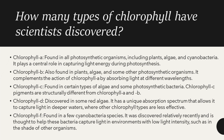Chlorophyll D is discovered in some red algae. It has a unique absorption spectrum that allows it to capture light at deeper wavelengths, where other chlorophyll types are less effective. Chlorophyll F is found in a few cyanobacteria species. It was discovered relatively recently and is thought to help these bacteria capture light in environments with low light intensity, such as in the shade of other organisms.